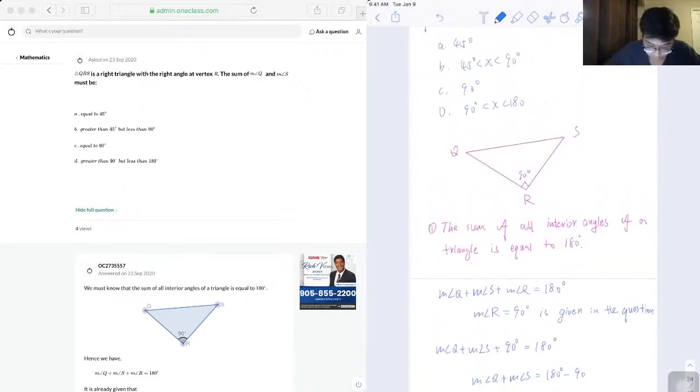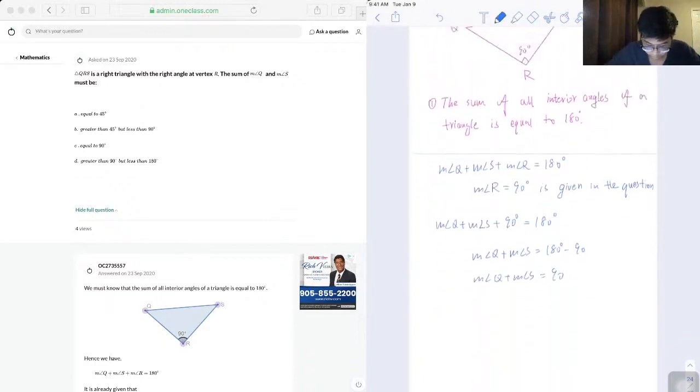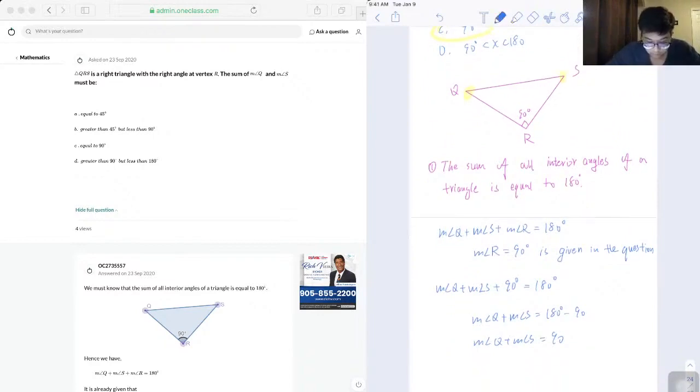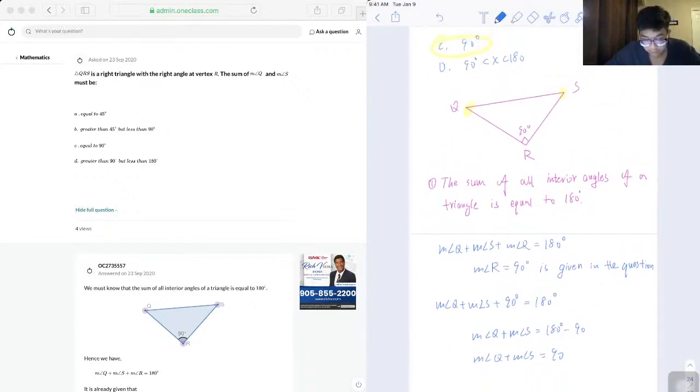So the correct answer should be C. Since the sum of Q and S is equal to 90 degrees, we can always substitute back to check. 90 degrees for R and 90 for Q and S—90 plus 90 is 180, which means our answer is correct.